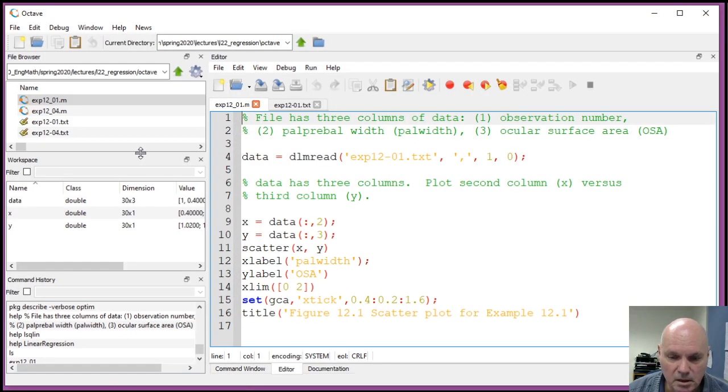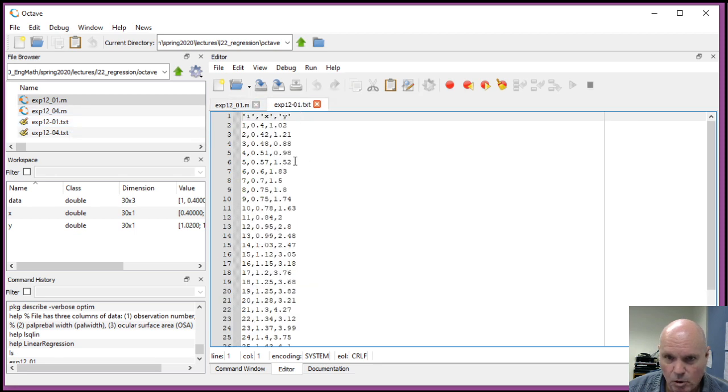We'll take a look at example 12.1 from the textbook. This is on page 470 of the textbook. The X data here is the width of an individual's eye opening, and the Y data is the corresponding ocular surface area. The data set is in file exp12-01.txt, which is in our data set archive. And if you open that up and look at it, you'll see there are actually three columns of data here. There's the observation number, which goes from 1 to 30, and then the X data, and then a comma, and then the Y data.